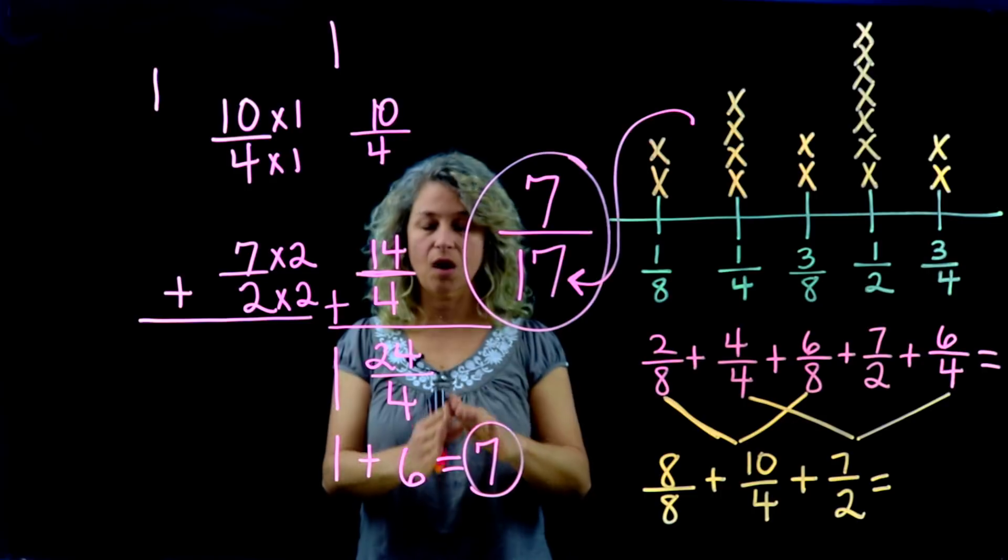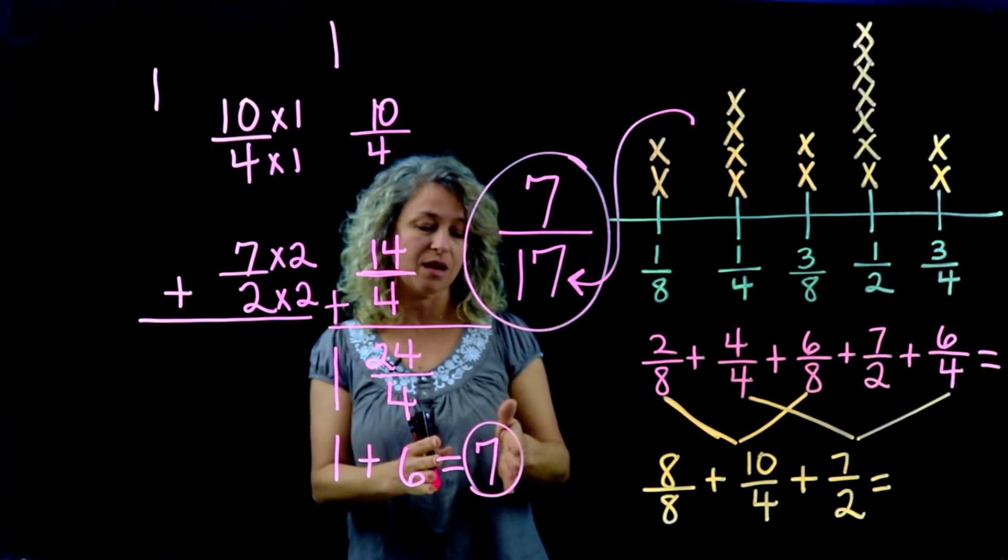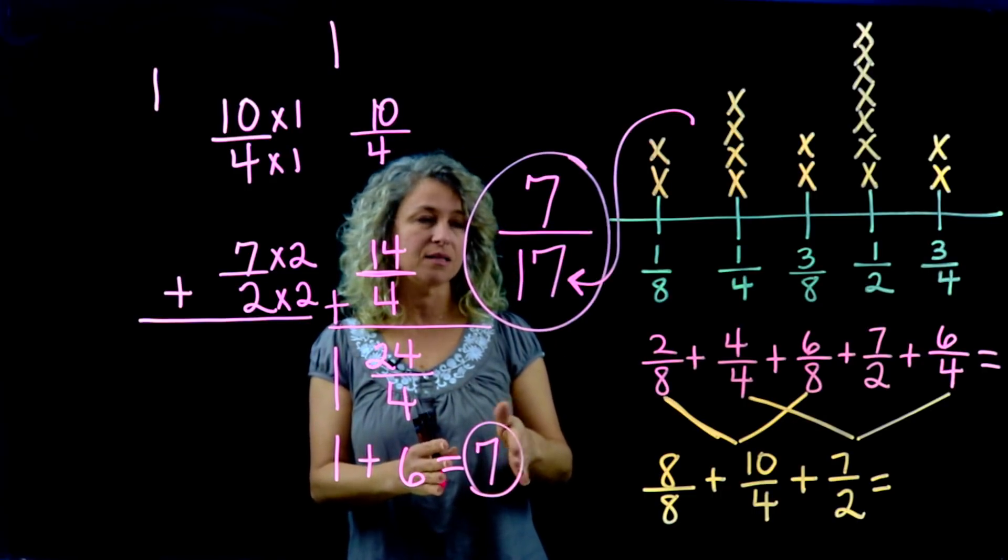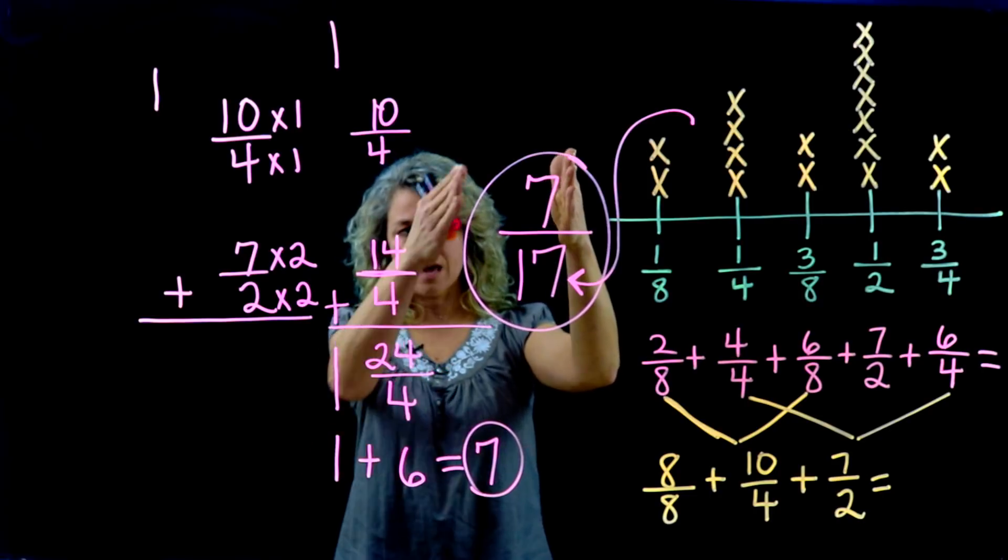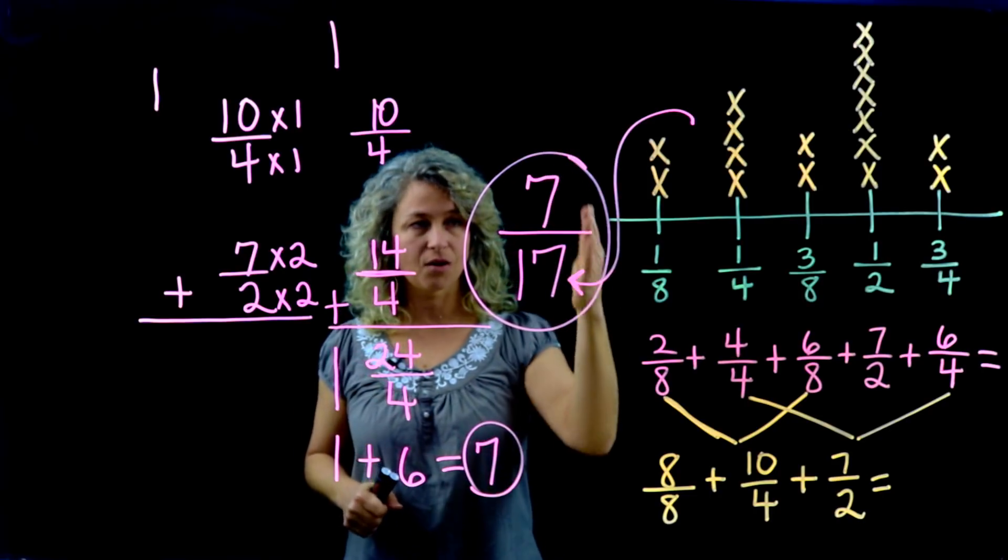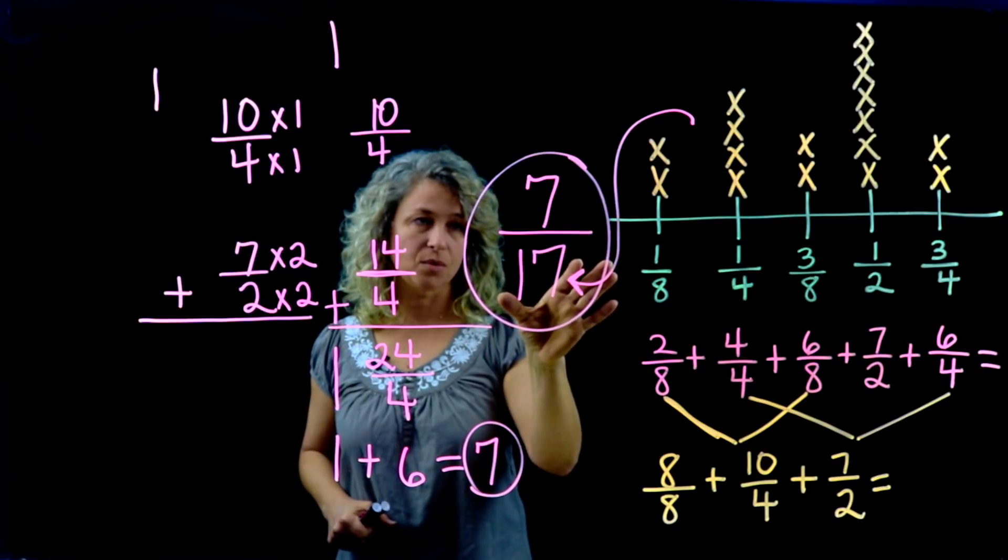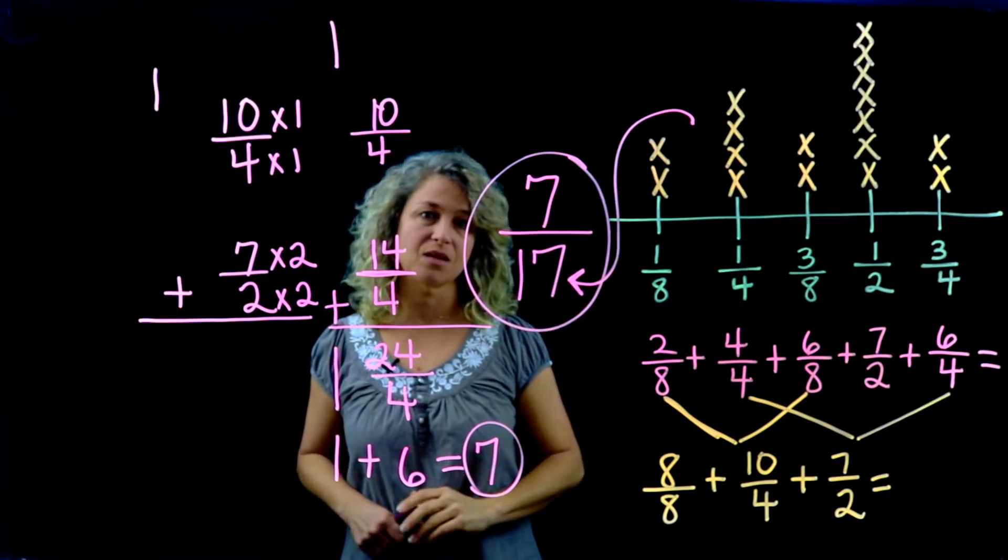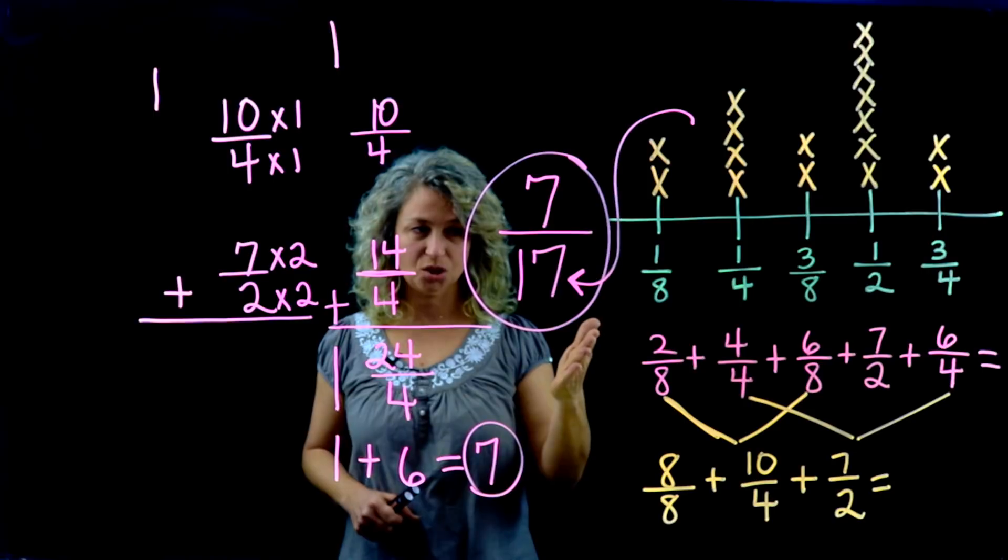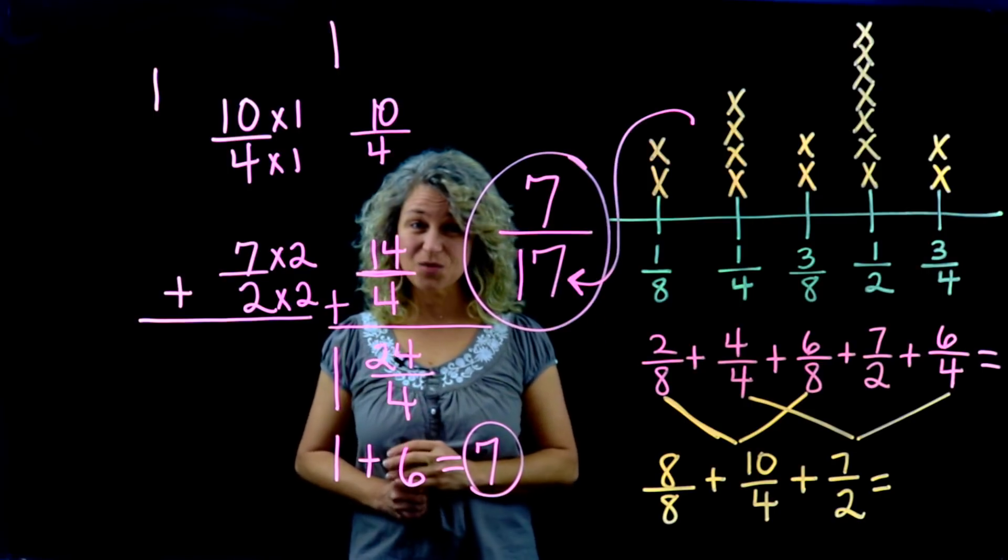When the denominators were different, we had to find a least common multiple. We found the entire total of all the amount of rain, which was seven inches, and then we took the seven—it goes on top of our fraction as the numerator. The 17 is the bottom number, and here is the average: seven-seventeenths of an inch. All right, thanks for watching.